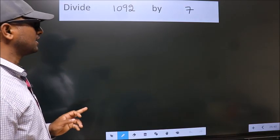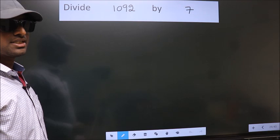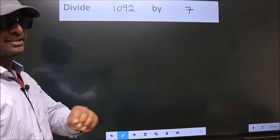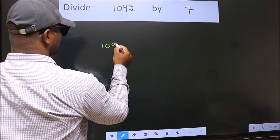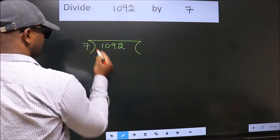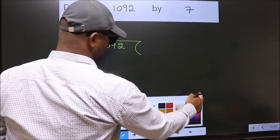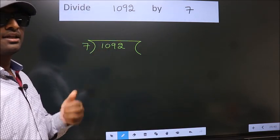Divide 1092 by 7. To do this division, we should frame it in this way. 1092 here, 7 here. This is your step 1.